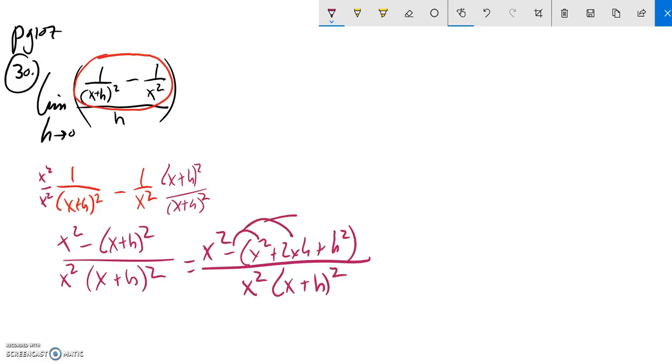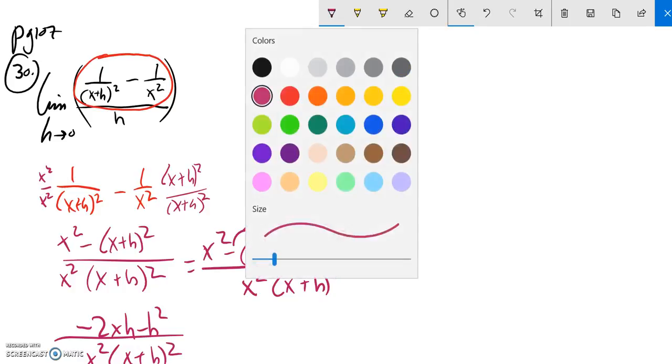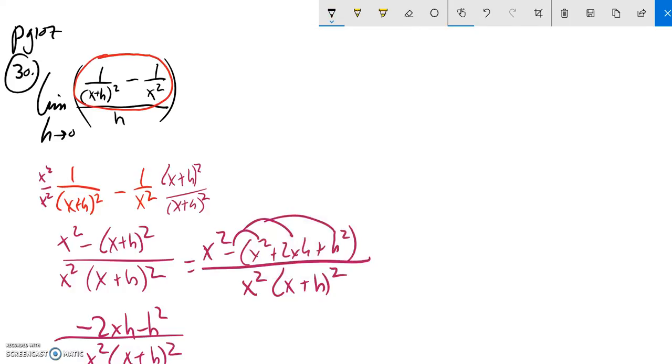That negative is going to get distributed in there. So x squared minus x squared is 0, leaving me negative 2xh minus h squared all over x squared times (x + h) squared. So all that work was just to do this subtraction of those fractions in the numerator.